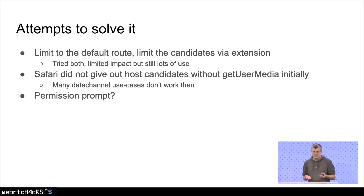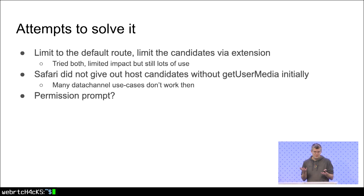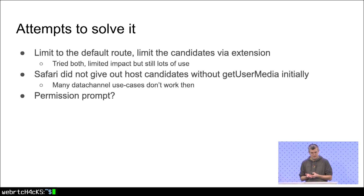There have been a couple of attempts to solve it — like limiting candidates to the default route, so you only get a single candidate, not all of them, not any VPN candidates, unless getUserMedia is called before. It was also possible to limit the candidates via extension APIs. Both were tried, and they probably limited the privacy impact a lot, but we still saw a lot of use of this pattern. Safari said they don't like the privacy aspect, so they didn't give out any host candidates unless getUserMedia was called. As a result, many data channel use cases were broken with Safari initially.